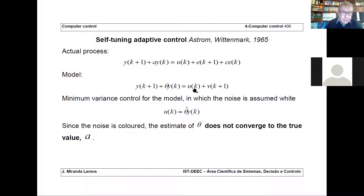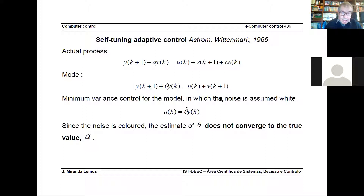We have a problem because theta-hat does not converge to the true parameter value a, because of the fact that the noise is not white. It happens that your controller — your minimum variance controller — should be more complicated because we're ignoring the fact that V is not white. So we have two problems associated with V not being white: one is the bias of the estimate — the estimate has a systematic error — and the other problem comes from the fact that the minimum variance control law is not the simple one, but depends on the noise model.